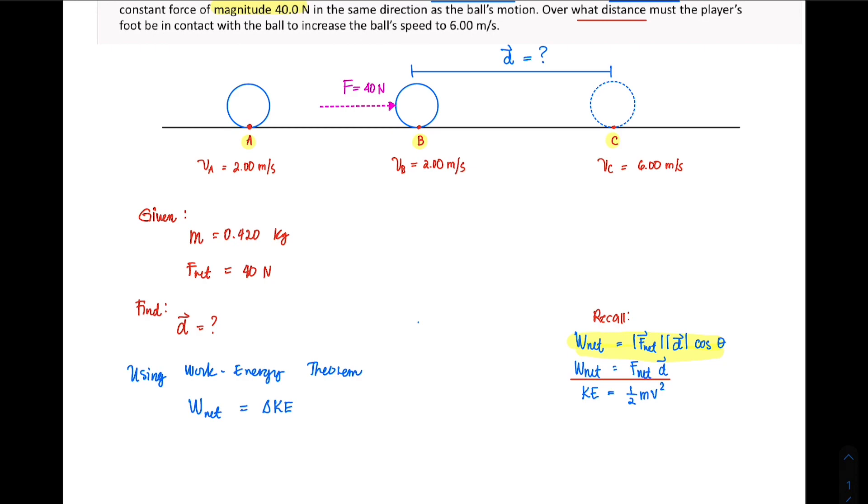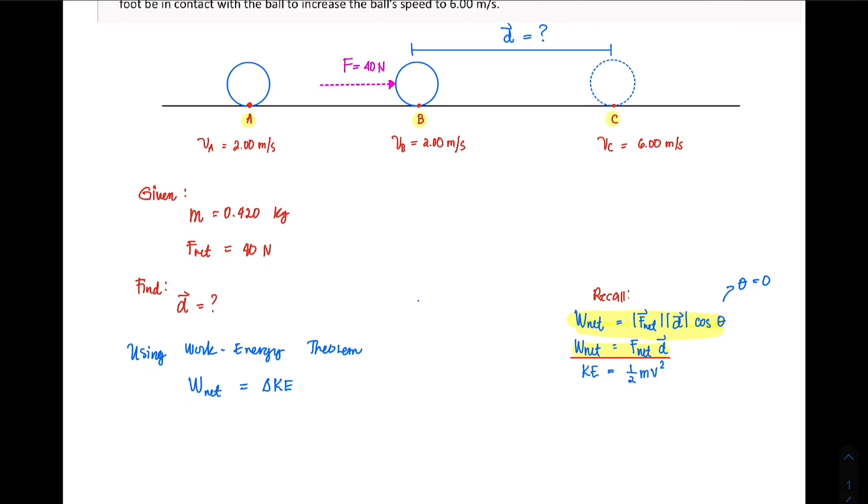This is something I already discussed in the recall section from the previous video. Since we are looking at network, we could express it as F_net·d·cos(θ). I'm considering the case where theta equals zero since the force and displacement lie in the same direction, so we end up with work_net equals F_net times the displacement.